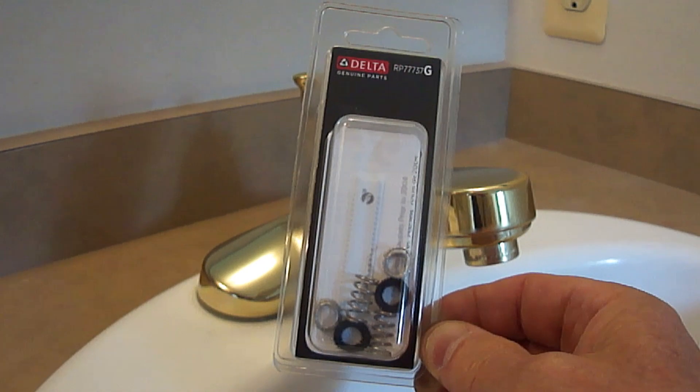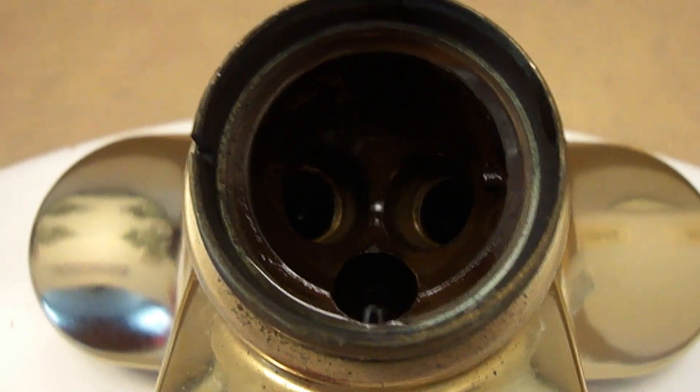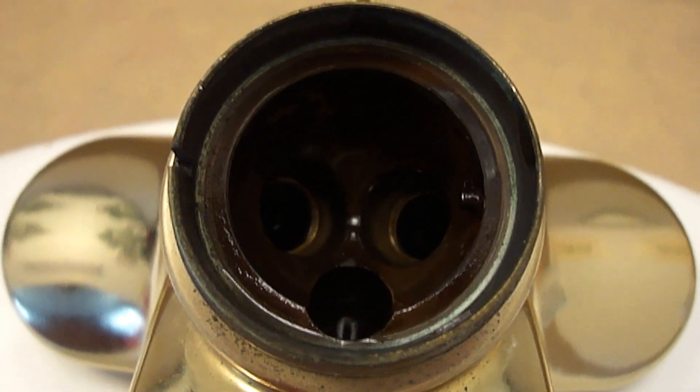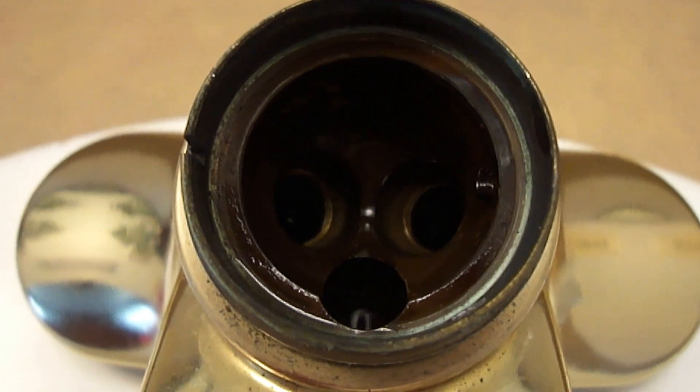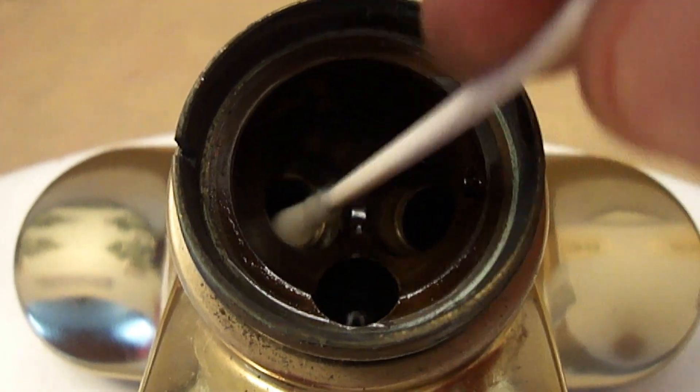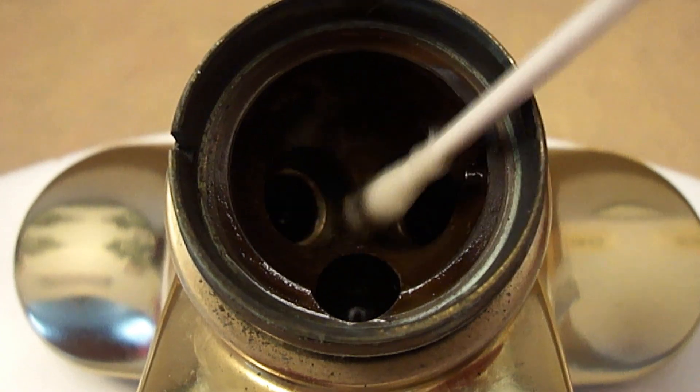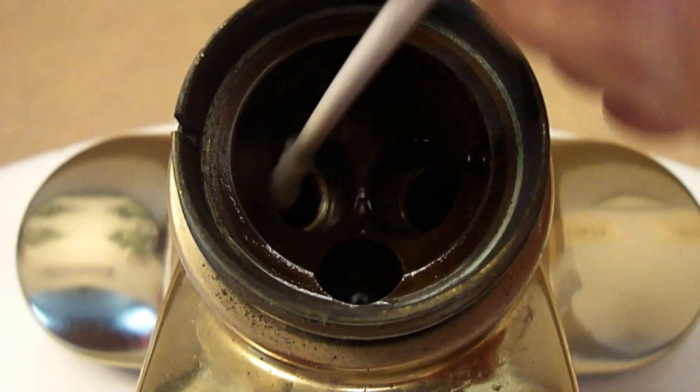And here's my new washer and spring kit. The other thing I like to do before I put everything back together is I like to dip a Q-tip in apple cider vinegar and clean all the surfaces. I also do this to the ball valve as well.